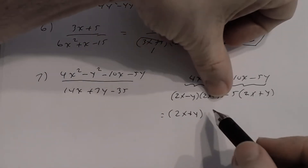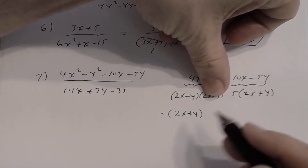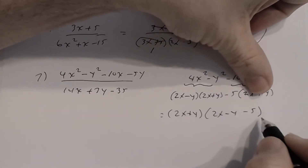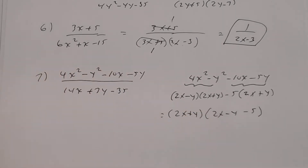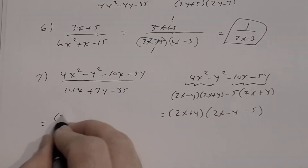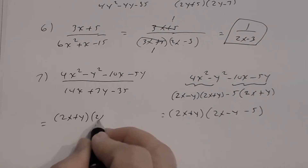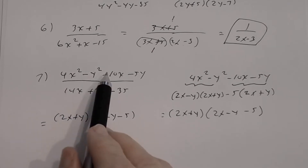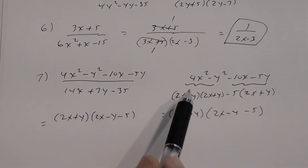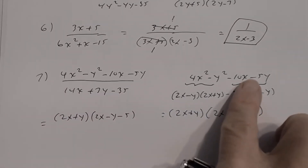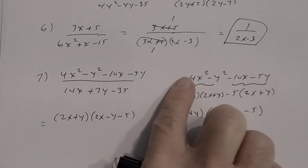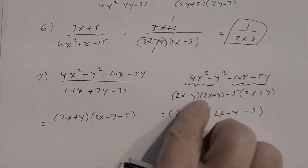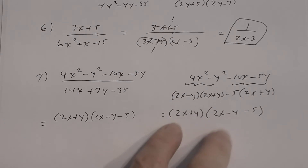Both groups now share (2x + y) as a common factor. Factor out (2x + y), and what's left is (2x − y) from the first group and −5 from the second. So the numerator becomes (2x + y)(2x − y − 5).